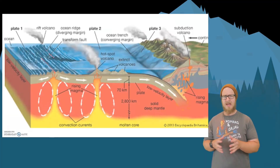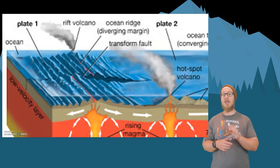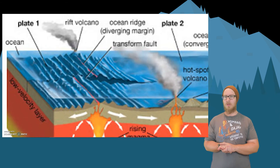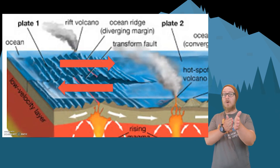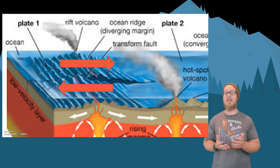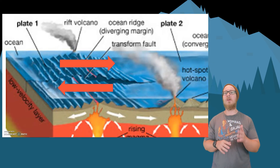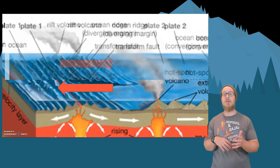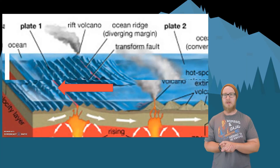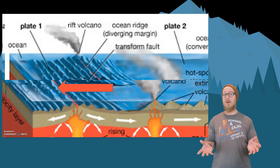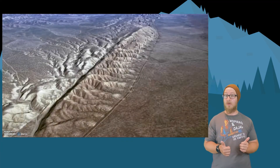Let's look at the third type of plate boundary. A transform boundary occurs when two plates move alongside each other. As these plates move alongside each other, it's very common for earthquakes to happen as one plate slips forward. A very popular transform boundary is the San Andreas Fault in California.